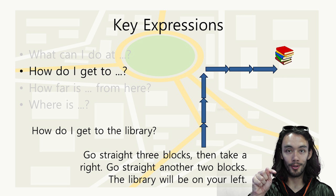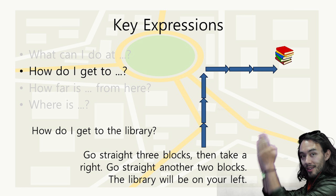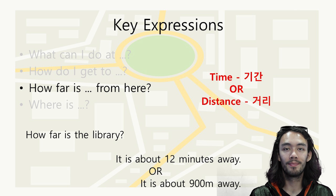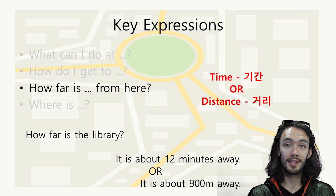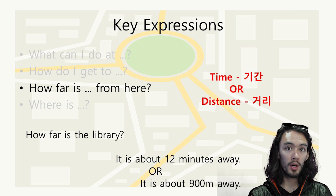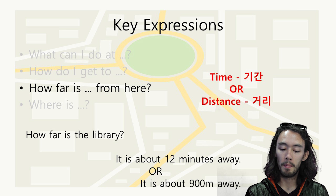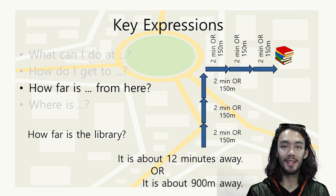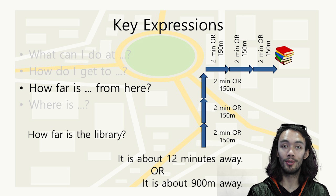Here is a picture: go straight three blocks, turn right, go straight another three blocks and the library is now on the left. 'How far is the library from here?' — it is about 12 minutes away, so you must walk or drive for 12 minutes, or I can give you the distance: it is about 900 meters away.